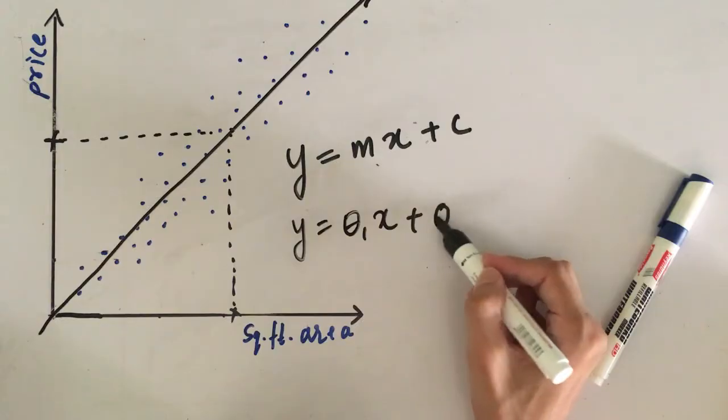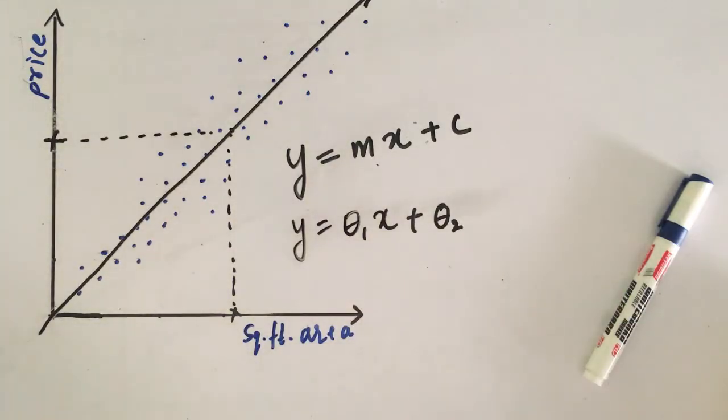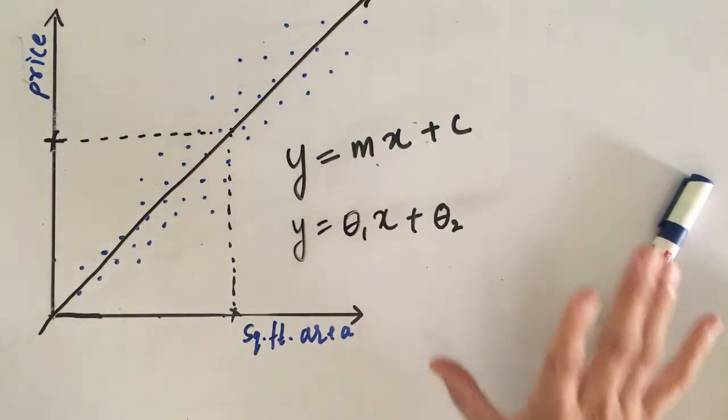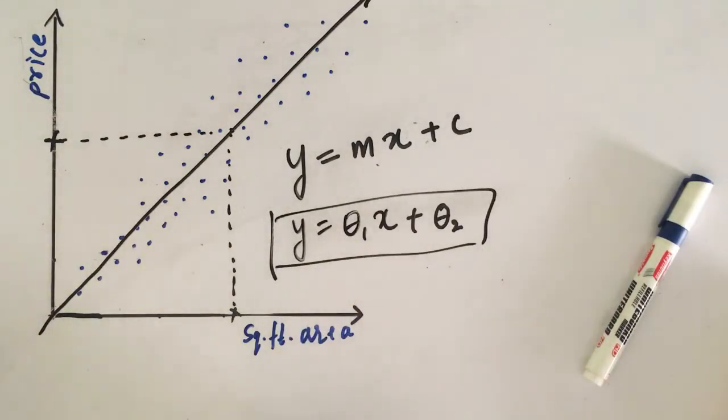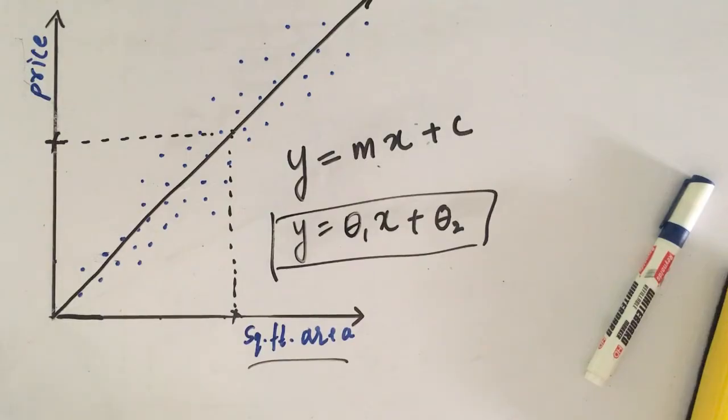And the reason I am doing this you will get to know as we discuss further. But let's say I have done this right now and we have the equation of our line as y equals theta 1 x plus theta 0. That is very basic simple mathematics. Now this was a very simple problem because it had only one variable that is square foot area.